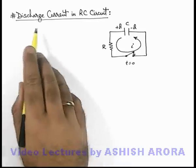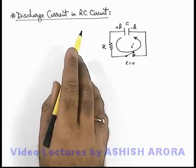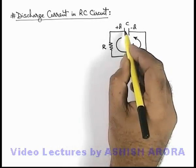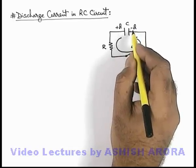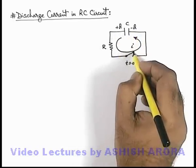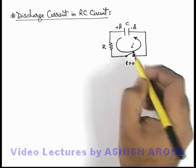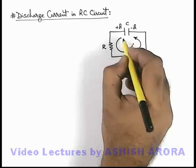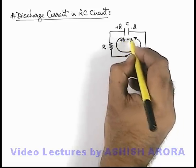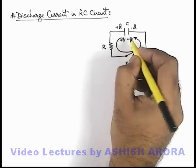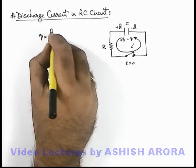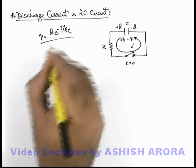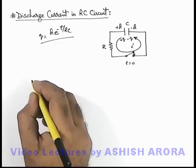Let us now study about the discharge current in RC circuits. This is the similar circuit we discussed in the previous sections. There is a capacitor with initial charge plus Q and minus Q on the plates, connected with a resistance. If the switch is closed at t equal to zero, a current flows in the circuit which discharges the charge on the plates. With time, the charge on plates can be written as Q·e^(-t/RC). This is the charge on the capacitor plates as a function of time.